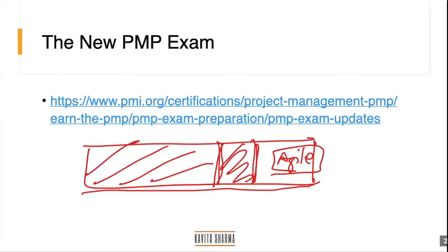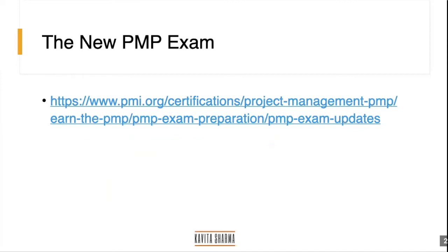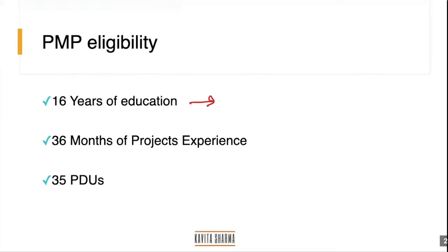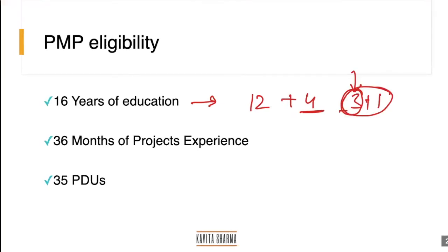People not from an IT background — for example, insurance or medical domains — join workshops regularly. Let's understand what a project is, because some of you may have questions about eligibility. First, you need 16 years of education — meaning 12 plus four years, or equivalent combinations including diplomas from private or public institutes. Most of the challenge people face is around the project management experience requirement.